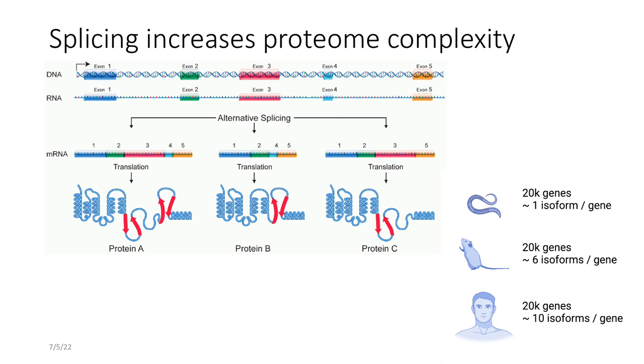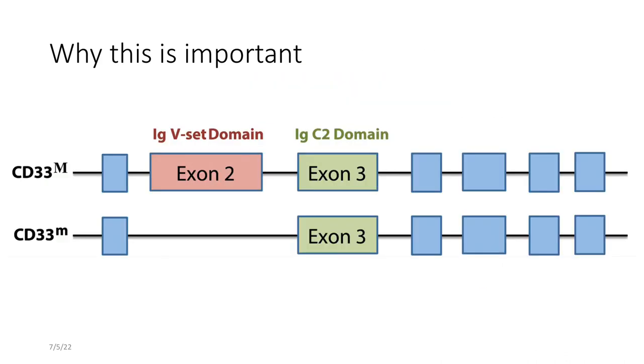And if that hasn't convinced you, another reason why this is important is because, for example, the short isoform of the CD33 gene is neuroprotective in cases of Alzheimer's disease, while the longer isoform is neurotoxic.